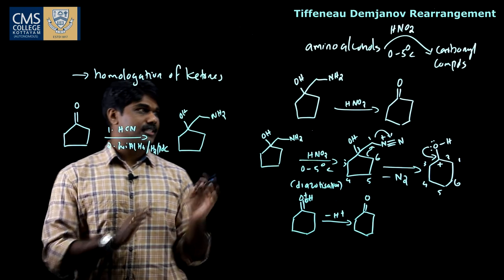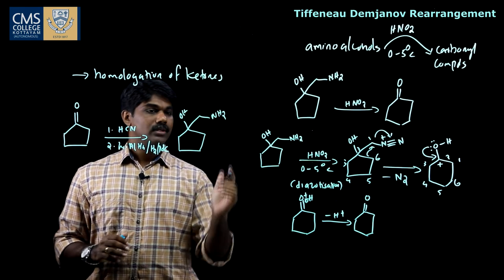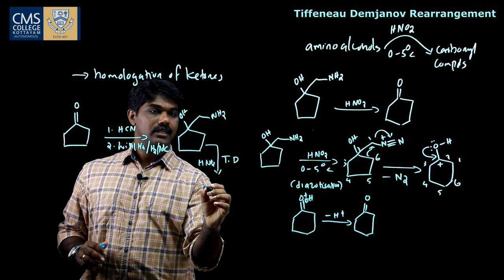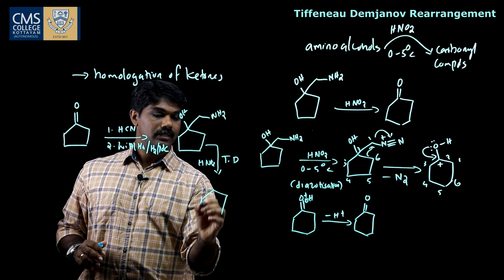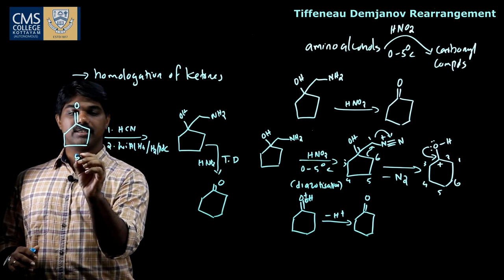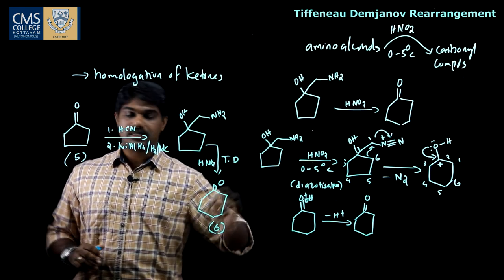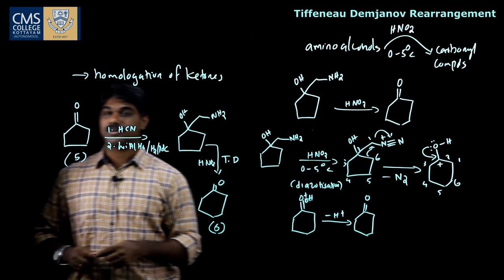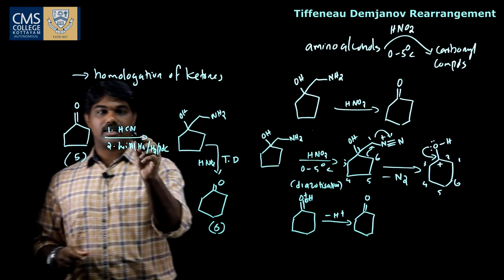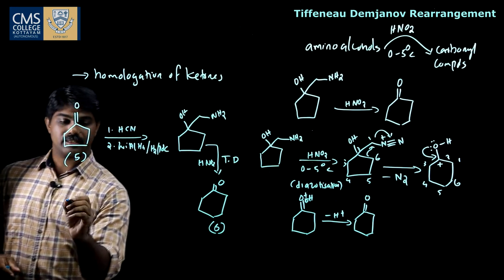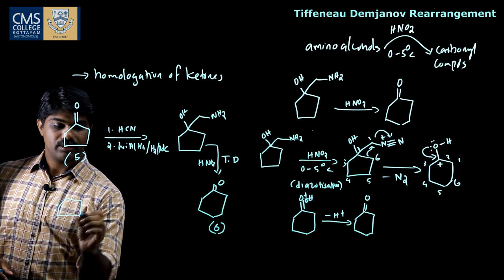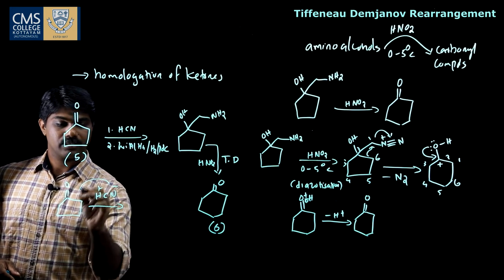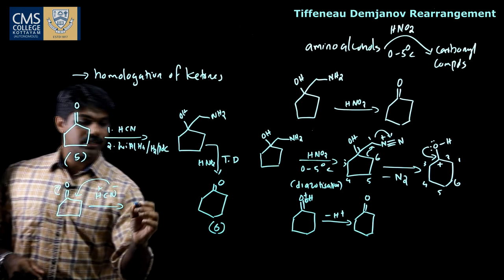This amino alcohol can then undergo the Tiffeneau-Demjanov rearrangement — reaction with nitrous acid — to give cyclohexanone. So a five-membered carbonyl compound gets converted into a six-membered carbonyl compound using this chemistry. In the HCN addition step, HCN dissociates into H+ and CN−, and nucleophilic addition takes place.